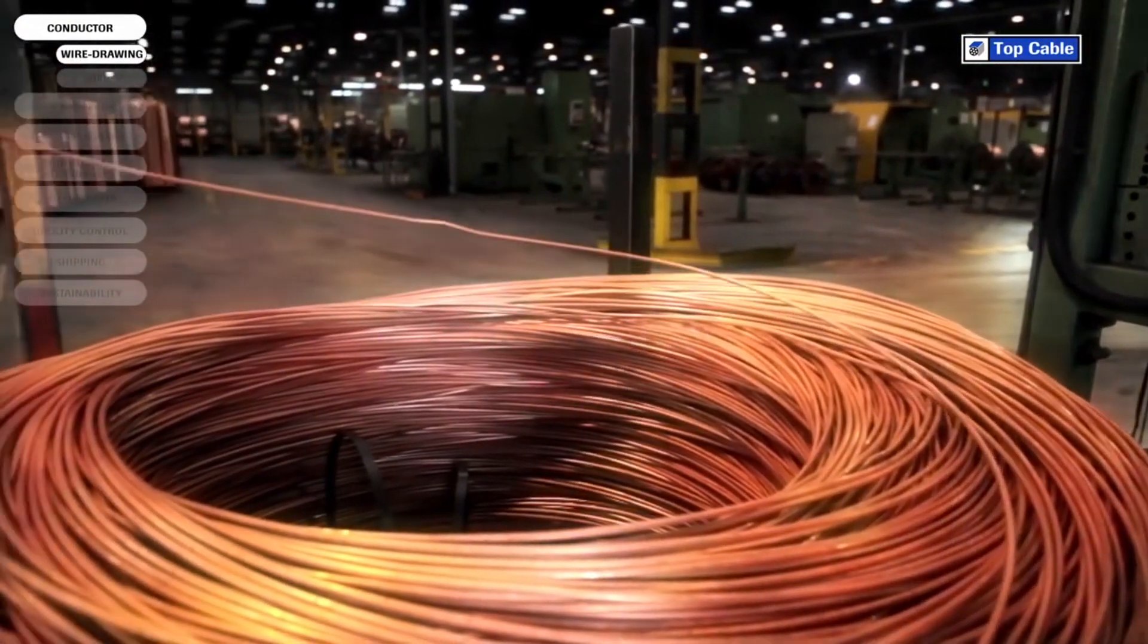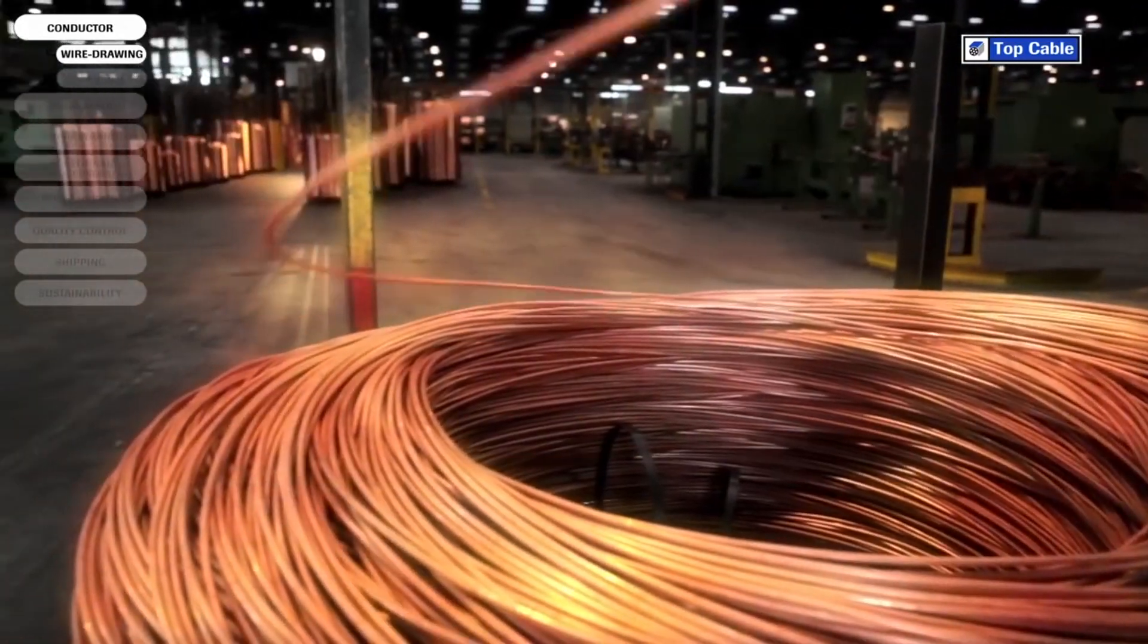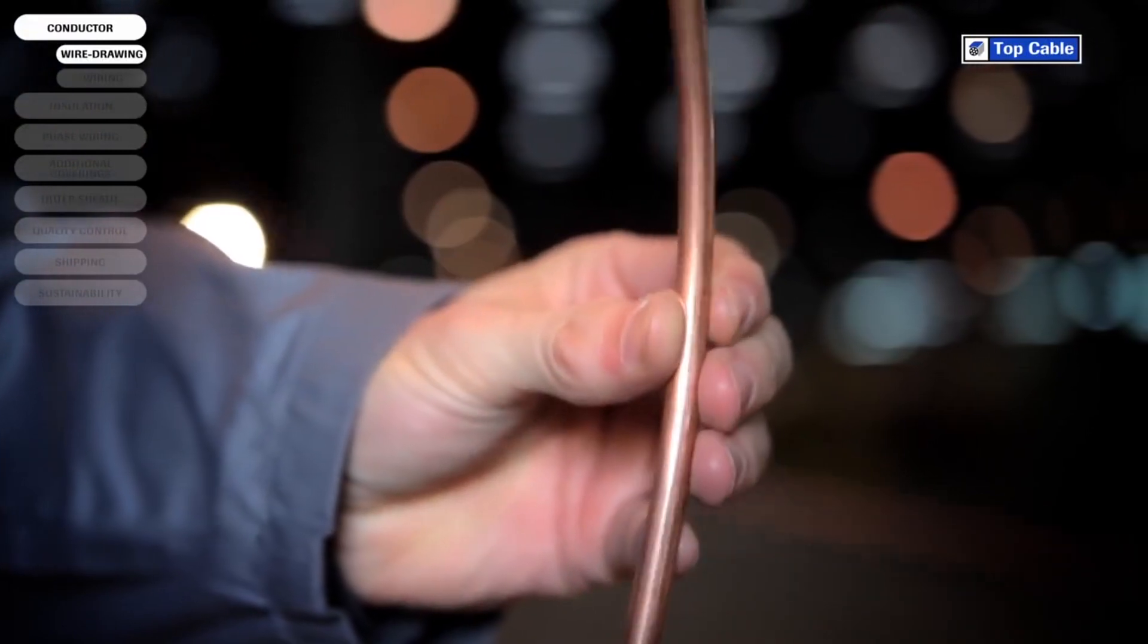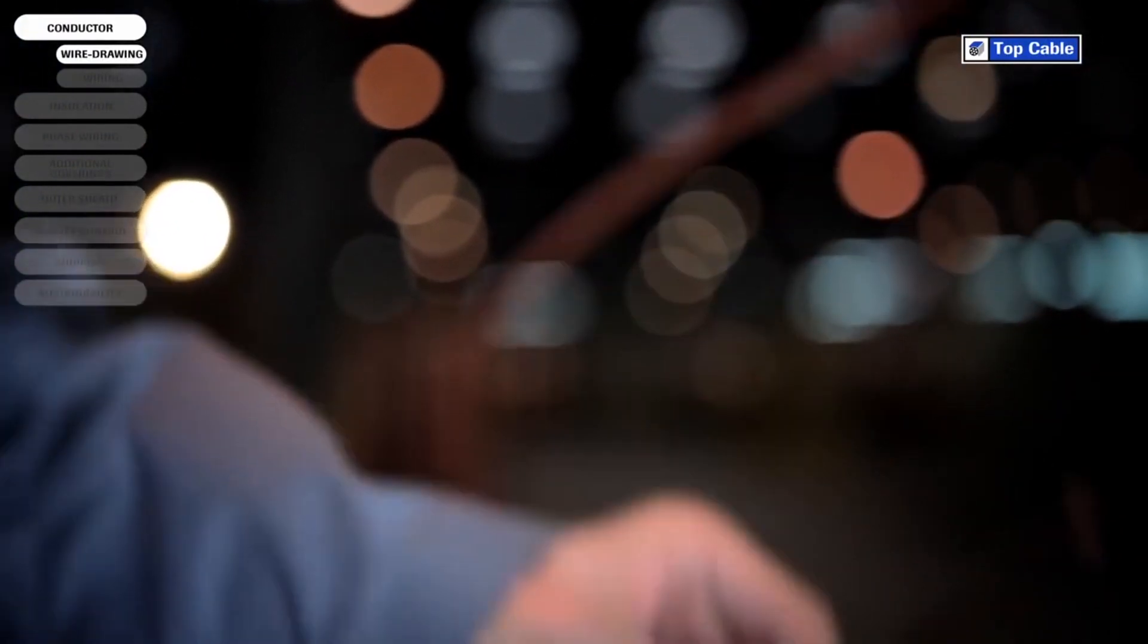The copper arrives from the foundry to Top Cables factories in large coils weighing five tons. This copper, eight millimeters in diameter, is technically known as wire rod.